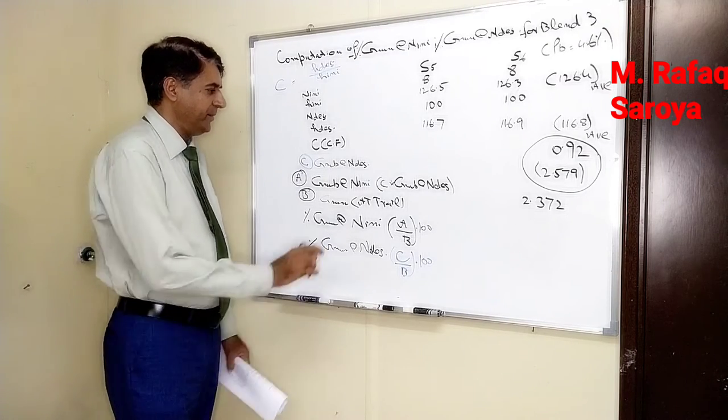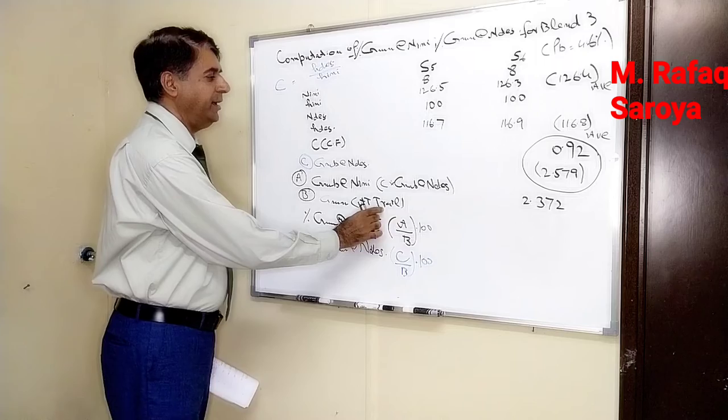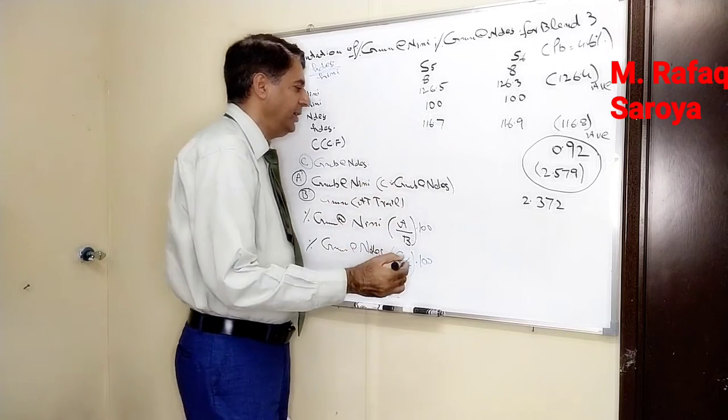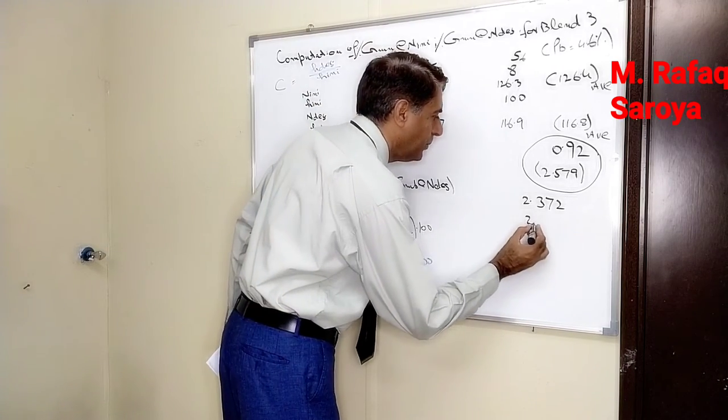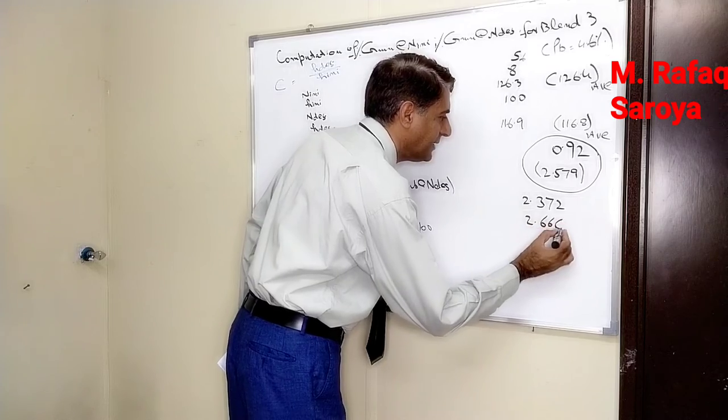Next, GMM at this blend trial. We have already calculated its value is 2.666.